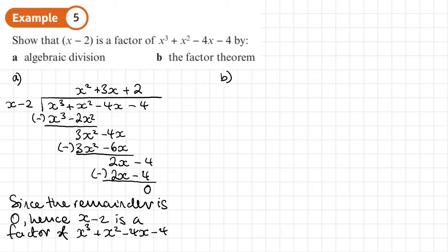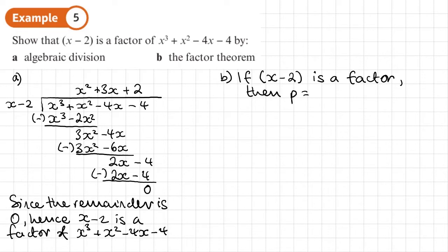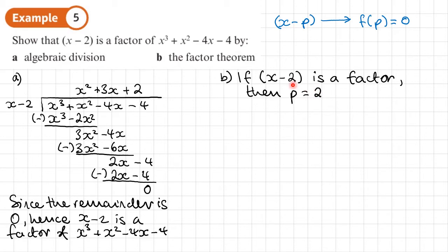Part b, using the factor theorem — this is much quicker. If x minus 2 is a factor, then p is equal to 2. Be careful, it's not minus 2. The factor theorem says that if x minus p is a factor, then f of p equals 0. So it's always a negative in the bracket. For example, if this was x plus 2, then p would be negative 2. So p is 2 because there's already a negative in the factor theorem.